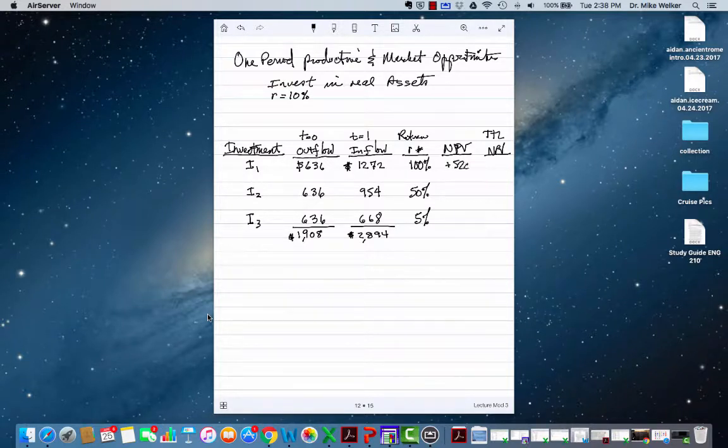If I invest in the first and second one, I would wind up with $751 in NPV. If I invest in the third one, I wind up with a little bit less, down to $722.